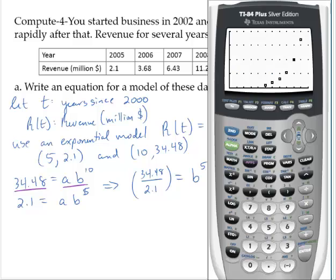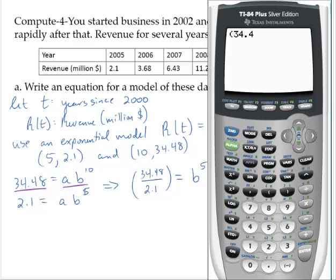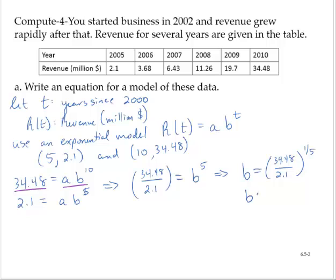Now let's go to the calculator. 34.48 over 2.1 raise that to the 1/5th power. And that gives us approximately 1.75. So b is approximately 1.75.